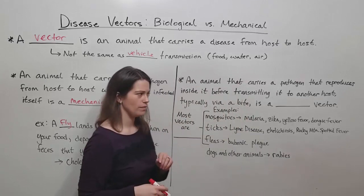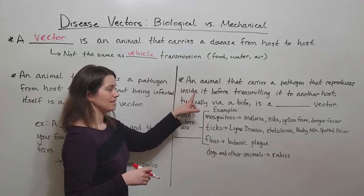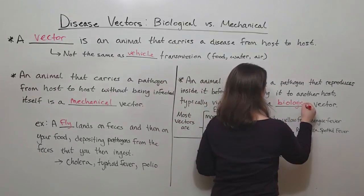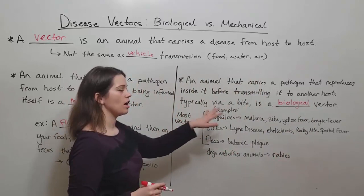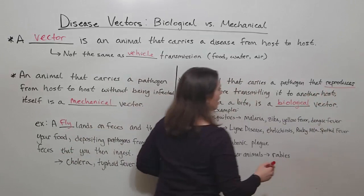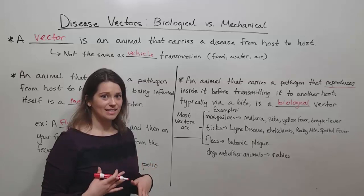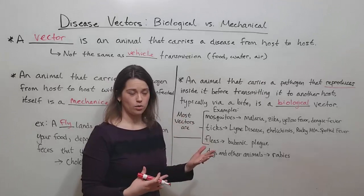An animal that carries a pathogen that reproduces inside it before being transmitted to another host, typically via a bite, is known as a biological vector. The important distinction here is that the pathogen is actually replicating inside the animal — although it may not cause disease or any symptoms for that animal — and then the animal vector transmits it to another host, usually but not always through a bite.